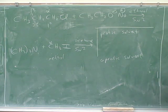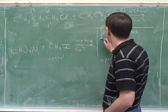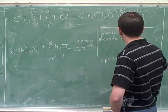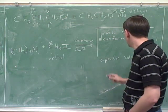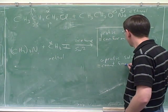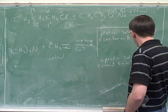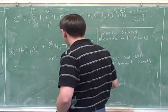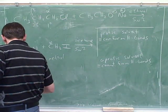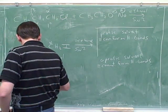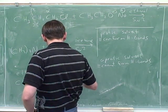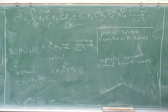So the two different types of solvents are protic and aprotic solvents. A protic solvent is a solvent that can form hydrogen bonds. And an aprotic solvent means it cannot form hydrogen bonds.